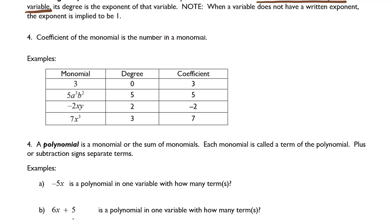If we have a monomial 5a to the 3rd b to the second, the degree is 5. Notice that the degree is the combined exponent of a and b, both variables. And the coefficient, the number in front, is 5. So we look at the exponents to find the degree, and we look at the number sitting in front to find the coefficient.